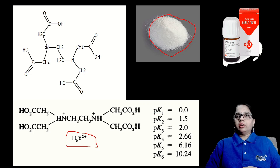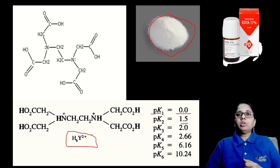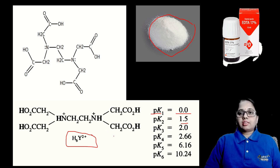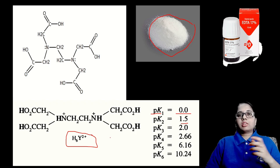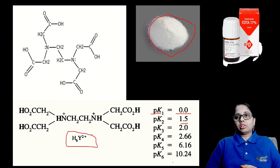The structure of EDTA can be written in a simplified formula. It has pK values at six levels: 1.5, 2, 2.66, 6.16, and 10.24. EDTA has six pK values because it acts as the titrating substance forming complexes. The acid dissociation constants have been determined, reflecting its Lewis acid behavior.